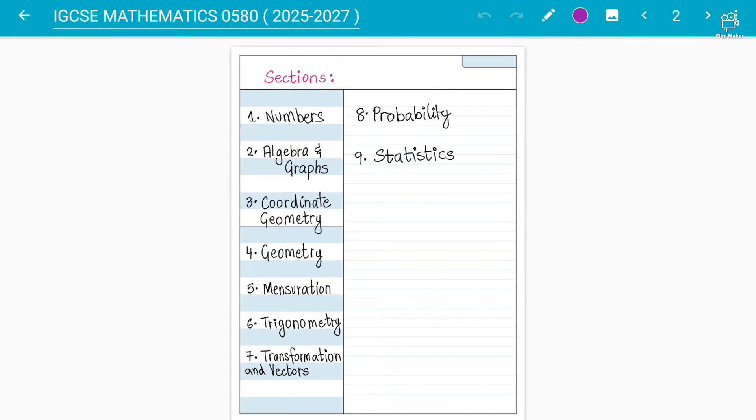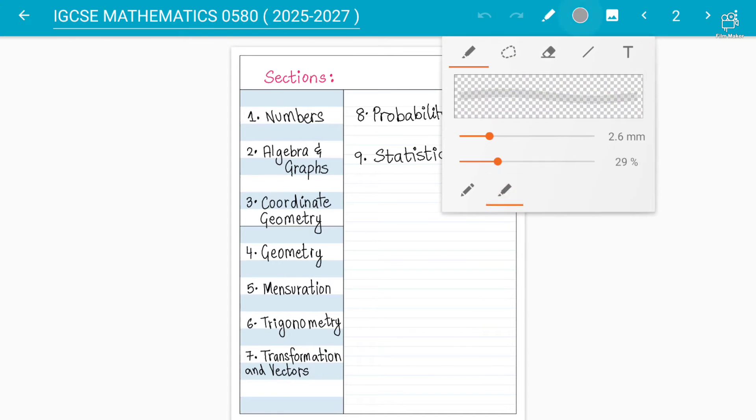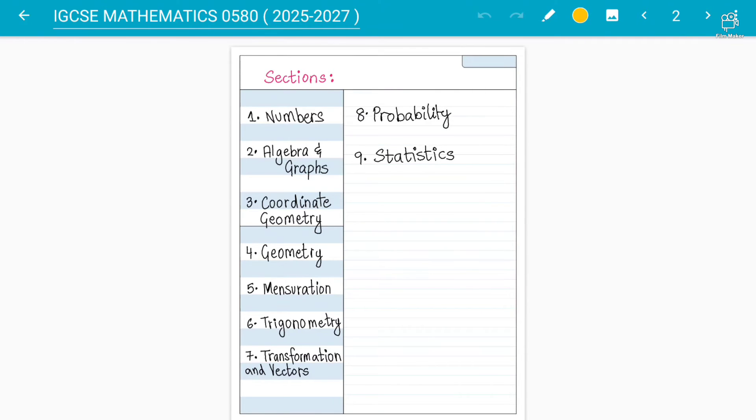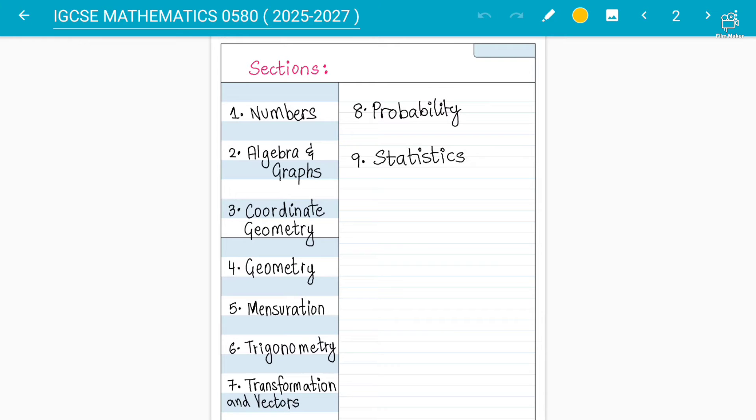Now let's talk about syllabus changes as well. Together with that I'll give you a brief overview about how I teach the syllabus. I divide this syllabus into nine parts, nine sections. It is like numbers we start off with. In numbers we can have fractions, decimals, simple interest, compound interest, profit loss, percentages, all of these chapters.